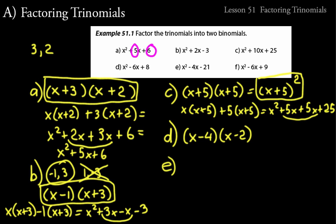Practice problem E: x² - 4x - 21. We need two numbers that multiply to -21 and add to -4. A negative seven times a positive three gives -21, and -7 + 3 = -4. So the answer is (x - 7)(x + 3). Note that (x + 7)(x - 3) would give +4 for the middle coefficient, which doesn't work.